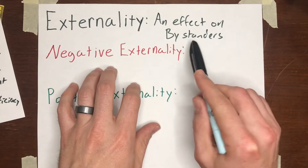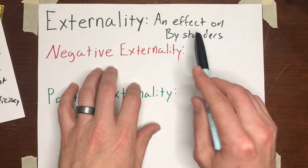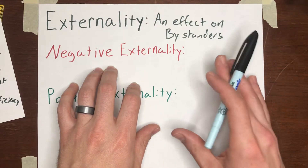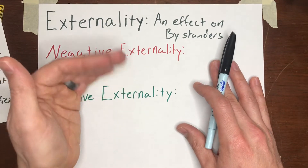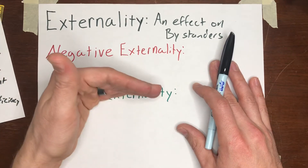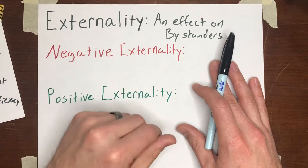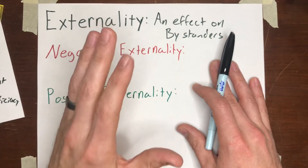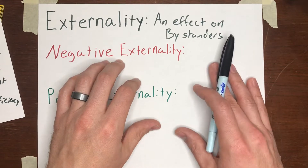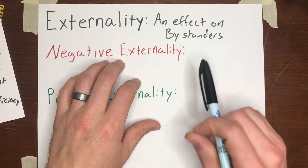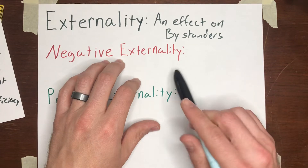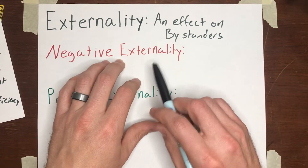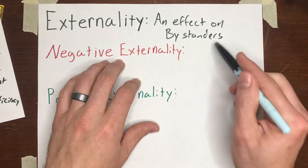A lot of goods — maybe even most goods that you consume — don't really have externalities, or at least don't have significant externalities. When you're talking about purchasing a hamburger at In-N-Out, the producer — the firm, In-N-Out — has their costs of producing that hamburger: the labor, the beef, the buns and all that. And you have a value for consuming it, a maximum price that you'd be willing to pay, and nobody besides you and the restaurant are really affected by this.